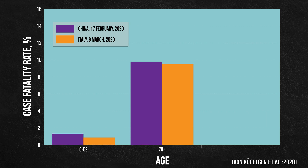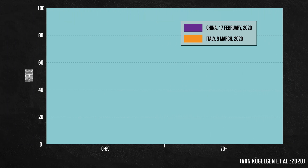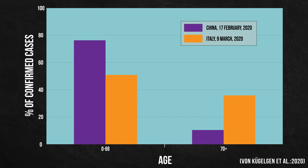As before, for all age groups, the case fatality rates in Italy are lower than those in China, while the total case fatality rate in Italy is higher than that in China. But important information is hidden when looking only at case fatality rates, because we don't know the sizes of the groups. If we look at the proportion of confirmed cases by age group, we find a much larger proportion of Italy's cases were among the higher-risk elderly group.